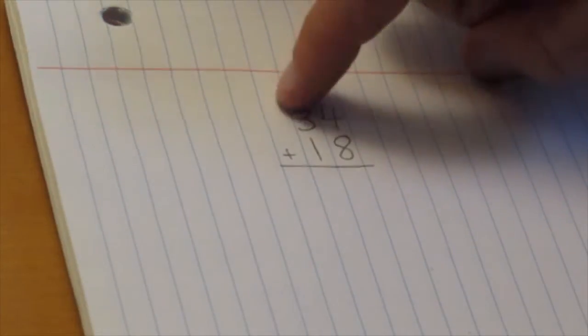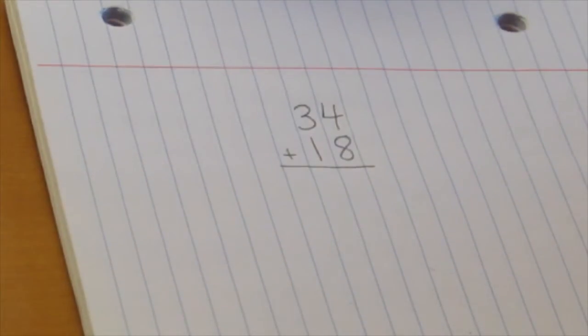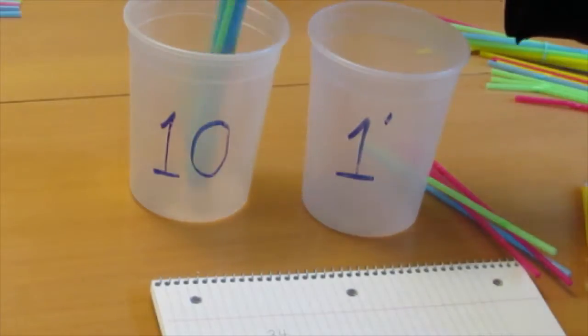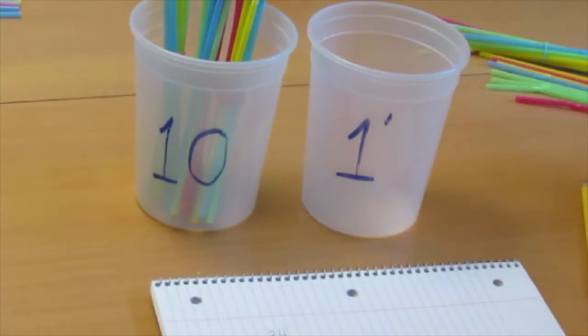In this example, we add 34 plus 18. We'll start by putting 34 into the buckets: 10, 20, 30, and 4.